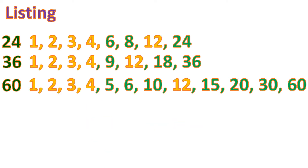We highlighted the common factors among all three numbers. The common factors are 1, 2, 3, 4, and 12. The rest are not common to all three — a factor must appear in all three numbers to count. Among those common factors, the greatest is 12. So the greatest common factor is 12.